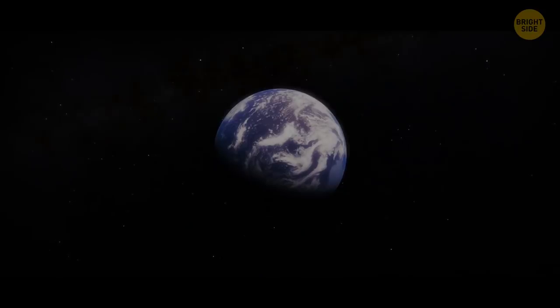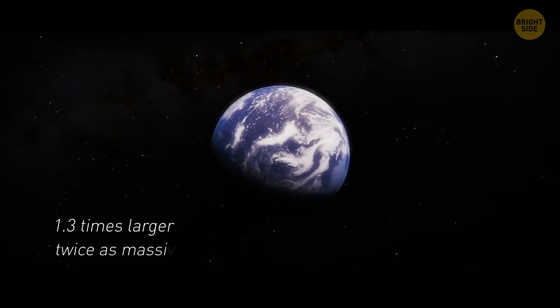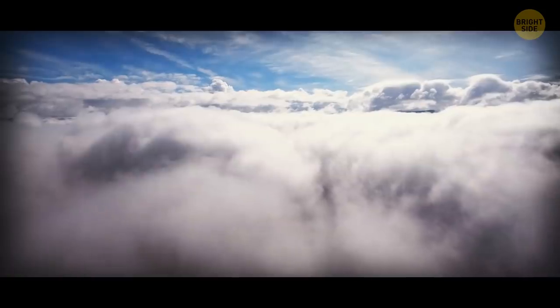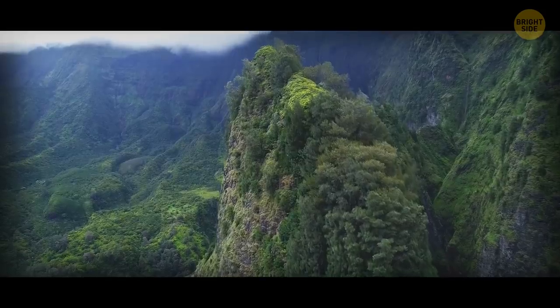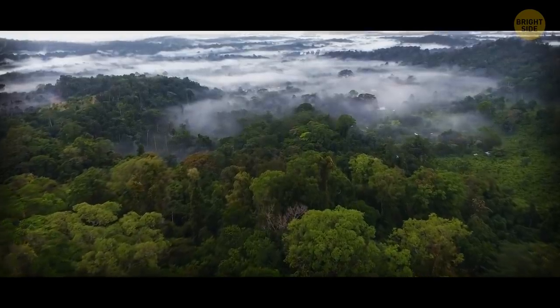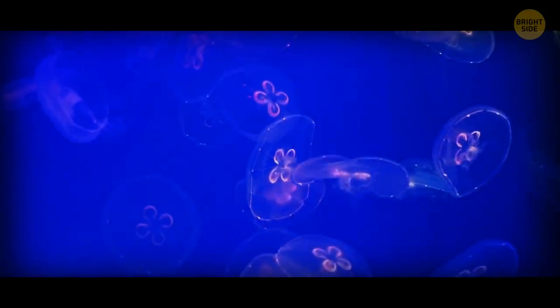These super planets must be 1.3 times larger than the Earth and twice as massive. Thus, they will have stronger gravity and, as a consequence, a denser and warmer atmosphere. So, the climate on superhabitable planets must be similar to the tropical climate on Earth. This will ensure the maximum diversity of living organisms.